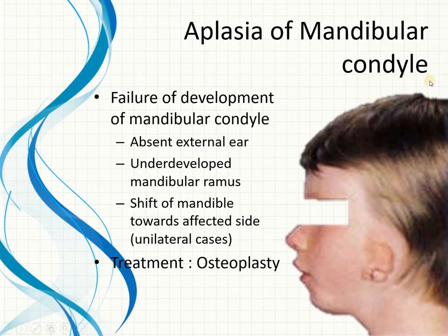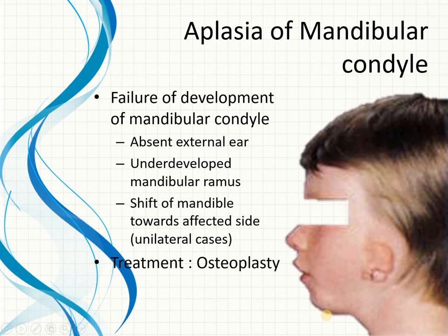Aplasia of the condyle refers to failure of the condyle to form during development. This can be associated with defects of the external ear and underdeveloped mandibular ramus, with the chin being very receding and small. There is no specific treatment, however an osteoplasty can be performed for normal functioning of the joint.